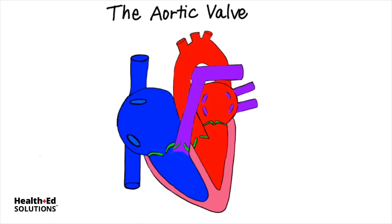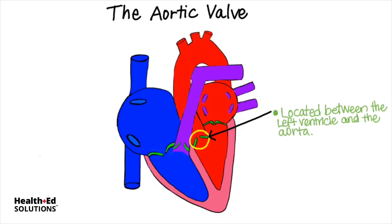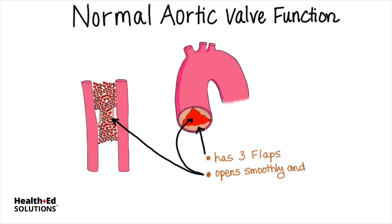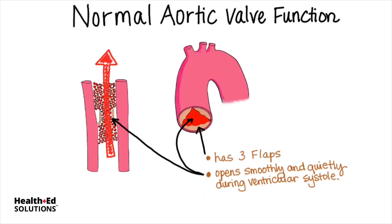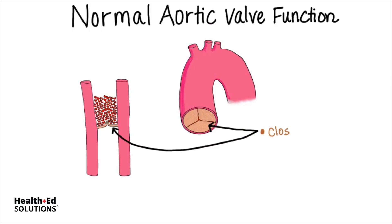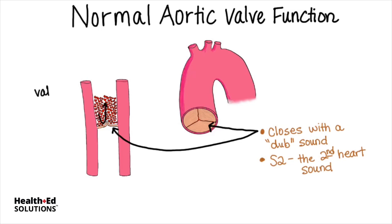The aortic valve is located between the left ventricle and the aorta. A healthy valve has three flaps and opens smoothly and quietly to allow blood ejection during ventricular systole. When ventricular systole ends, pressure drops rapidly in the left ventricle and the semilunar valve closes with a dub sound. This is known as S2, the second heart sound. This valve closure prevents backflow of blood into the left ventricle.